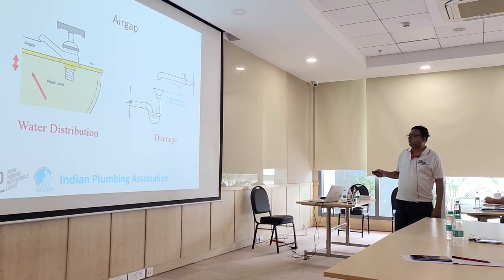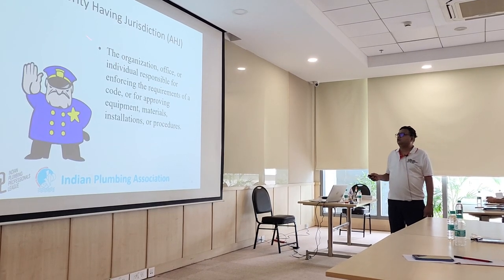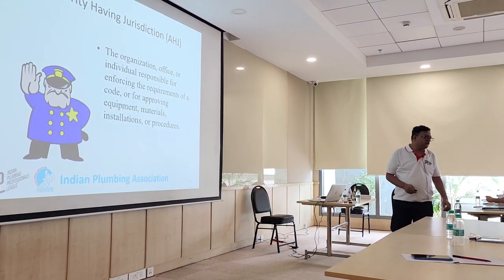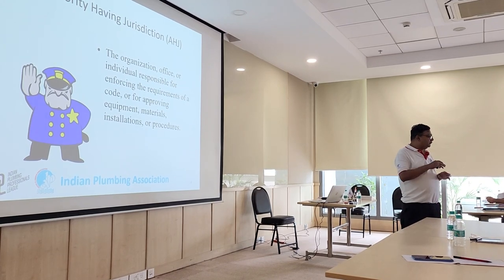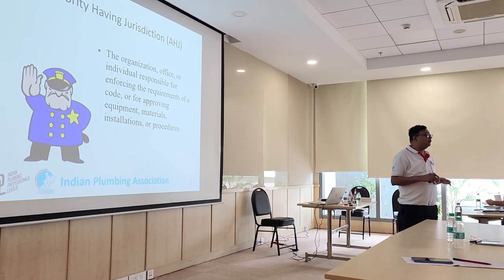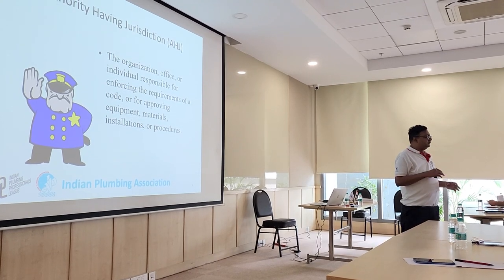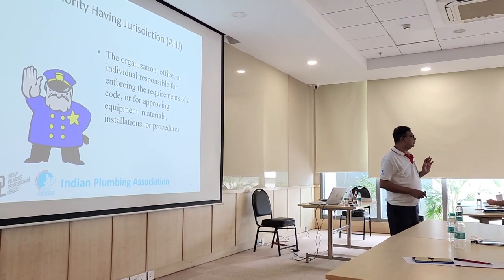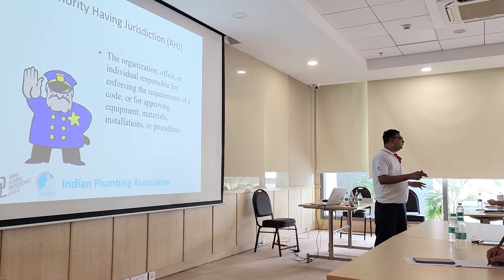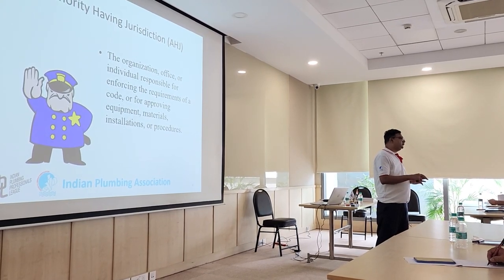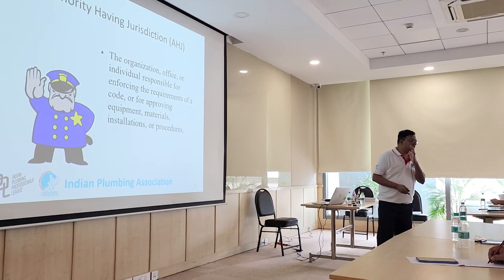Authority Having Jurisdiction — AHJ. If you refer to most foreign codes, whether plumbing, fire, HVAC, or electrical, you will find this terminology very common. AHJ is very popular in foreign codes but not commonly used with us, which is why it is given here.